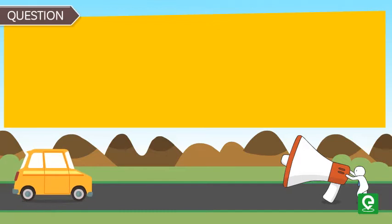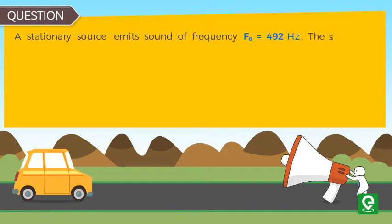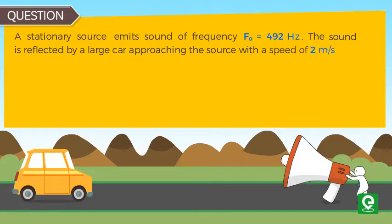Question: A stationary source emits sound of frequency f₀ = 492 Hz. The sound is reflected by a large car approaching the source with a speed of 2 m/s.